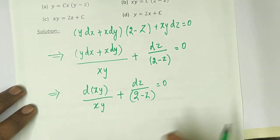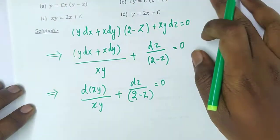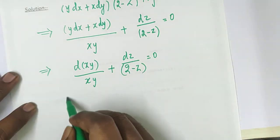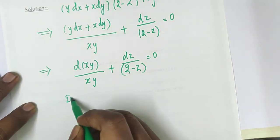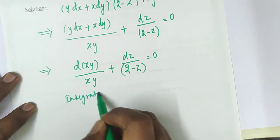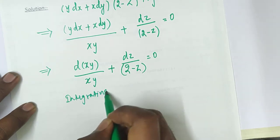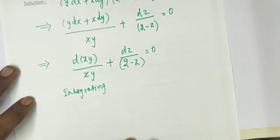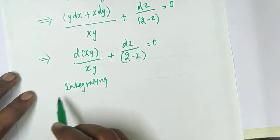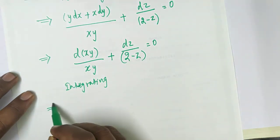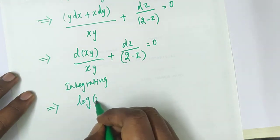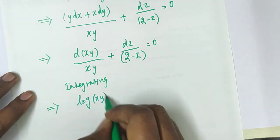Now we have xy and z terms. If we integrate this, d(xy) divided by xy integrates to log of xy.